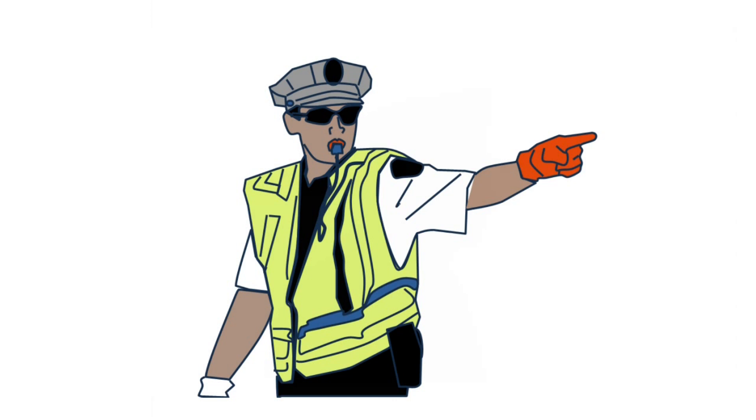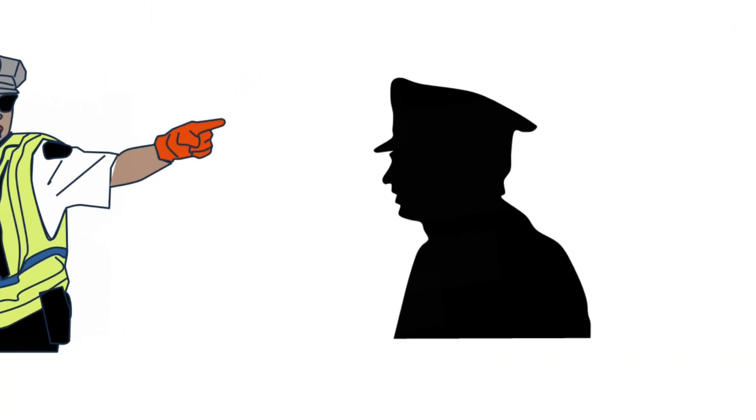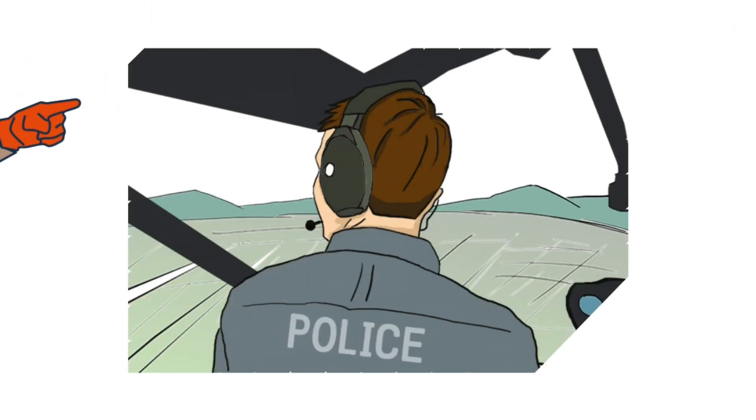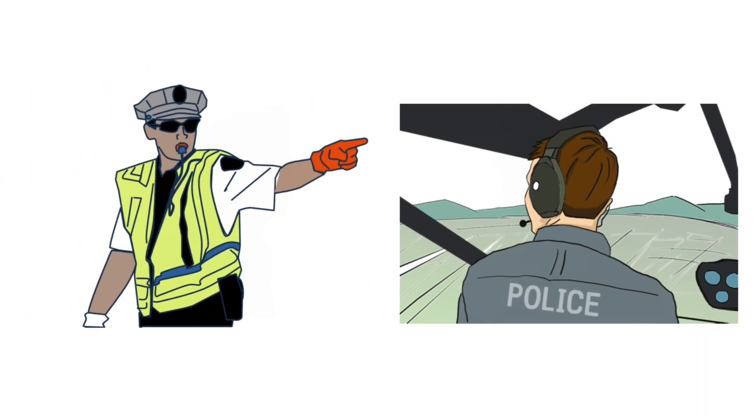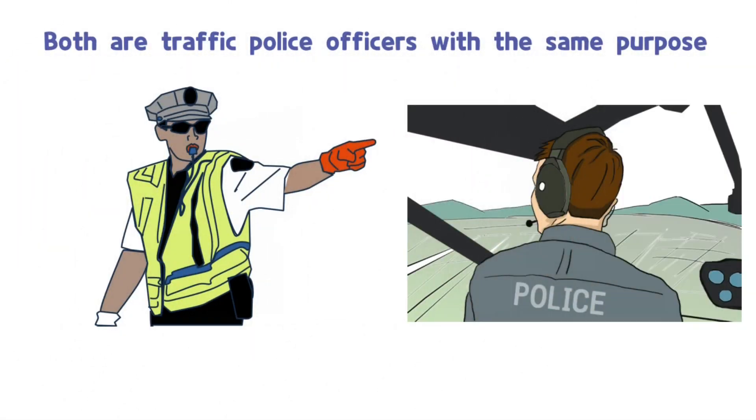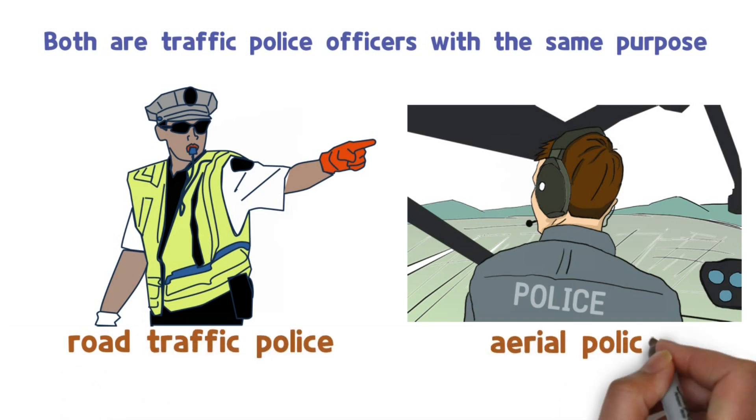There are two police officers here. One is controlling the vehicles on a complicated road, the other is boarding a helicopter and patrolling a highway. Both are traffic police officers with the same purpose, but one is called the road traffic police and the other is called the aerial police.